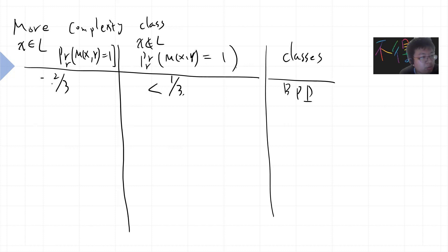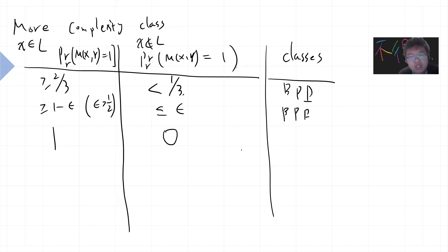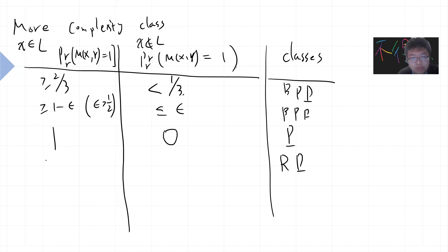For BPP, this is two-thirds and one-third respectively. A fact: if you take any threshold greater than or equal to one-minus-epsilon where epsilon is greater than half, you get the same class. The proof is just one sentence — use majority votes: run your algorithm multiple times and take the majority result. If epsilon is one and zero, you get no randomness, which is just P.